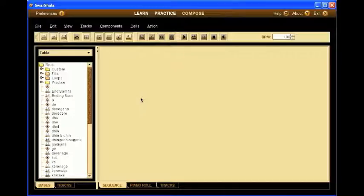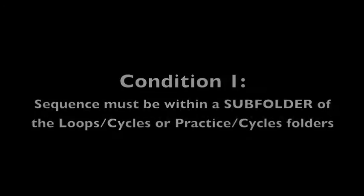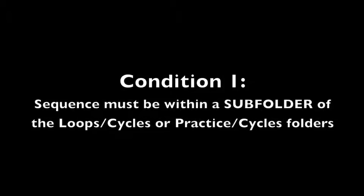First of all, the conditions required for a cycle to appear in the practice pane are the following. The sequence must be within a subfolder of the loop cycles or practice cycles folders. The sequence must have the practice cycle style selected. The sequence must have a tempo range that includes the selected tempo.